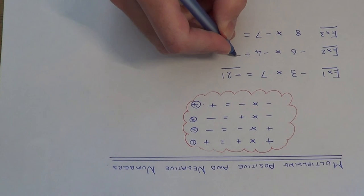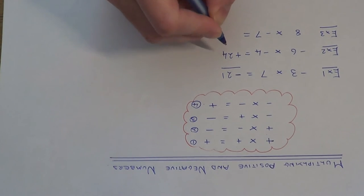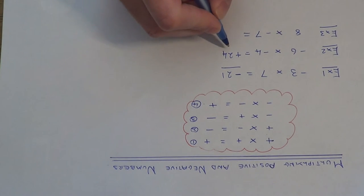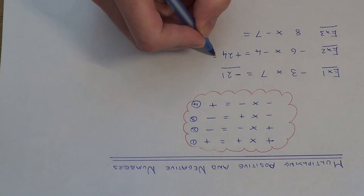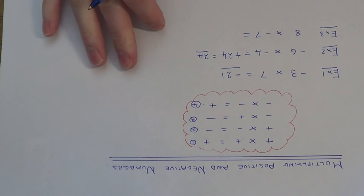We know our answer is positive, so we just need to work out six times four. Six times four is 24. So our final answer is plus 24. You don't have to put the plus sign there; you can just leave it as 24.